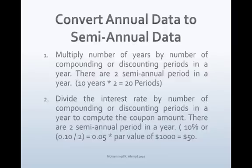First, convert the data into semi-annual data. Multiply the number of years by the number of compounding or discounting periods in a year. There are two semi-annual periods in a year. 10 years multiplied by 2 gives you 20 periods.